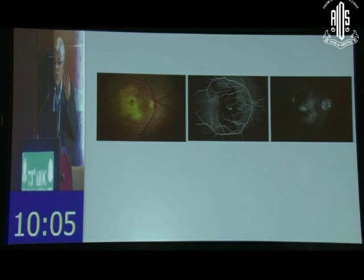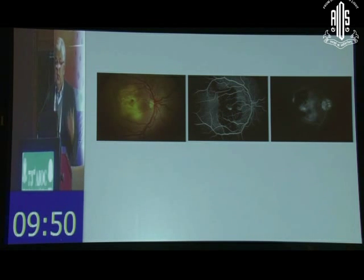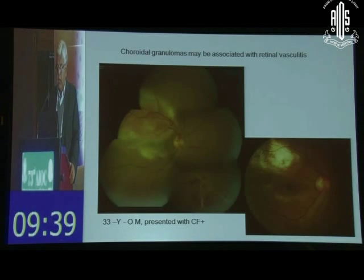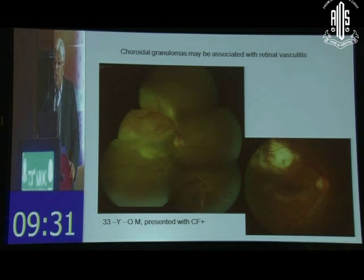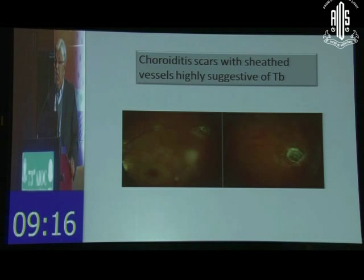What is going on here? You're seeing a choroidal granuloma and a tiny intraretinal hemorrhage in the center. On fluorescein angiography there is a vessel showing retinal angiomatous proliferation into this granuloma — a very classic sign of a TB granuloma. Some of these patients may also be associated with retinal vasculitis — what we used to call Eales' disease. When you see choroiditis scars along the retinal vessels showing sheathing or perivascular infiltrates, think of tuberculosis as a possible etiology.